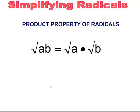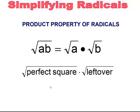To simplify radicals, we use the product property of radicals. This states that if you have a number under the radical, you can break it into factors — leaving them both under the radical — and it still means the same thing. When simplifying a radical, you find the highest perfect square factor and the leftover factor. If what's under the radical is not a perfect square, you simplify a piece — the highest perfect square factor.